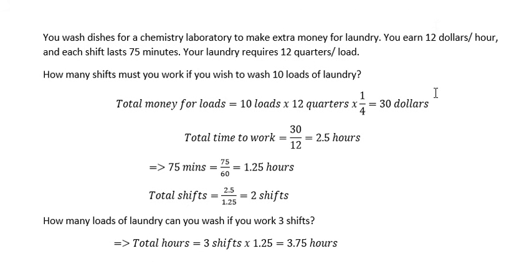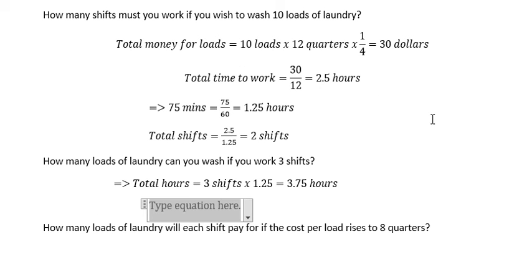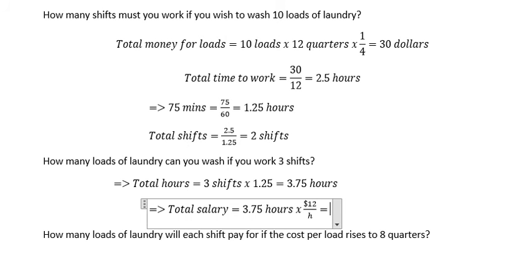The next one, we have $12 per hour, so we calculate how much money. Total salary is about 3.75 hours multiplied with $12 per hour, so you can get how much money.